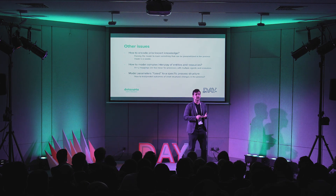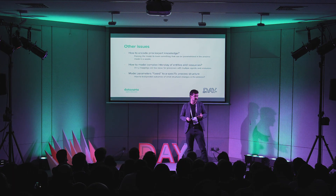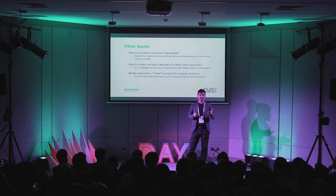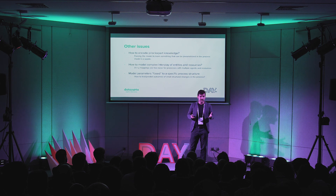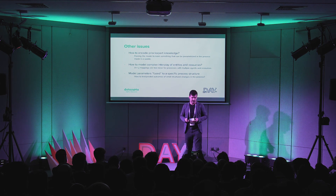Moreover, we have problems encoding prior expert knowledge in our model — why ask the model to learn something we already know? It's a waste of time and data. How do we model interplay of entities and resources? Modeling alternative scenarios is very hard too. Think of a bank with queues and counters — with a standard mapping approach, you cannot model what happens if you add five counters without actually collecting new data. We're doing training and testing on different inputs, but not on alternative process structures.